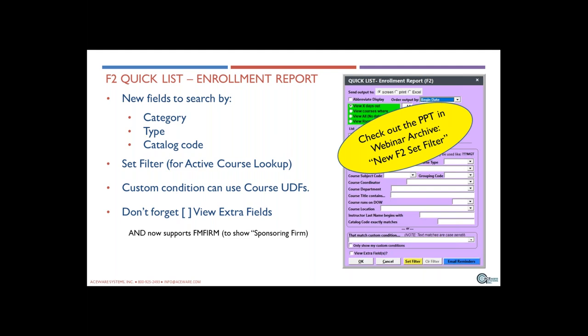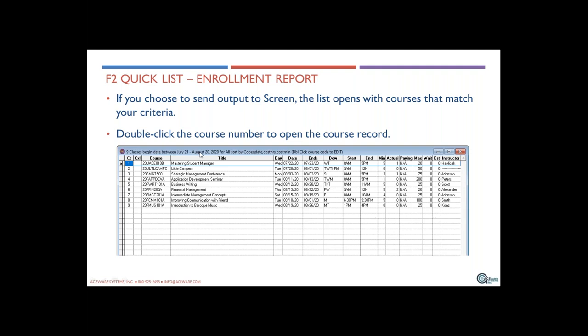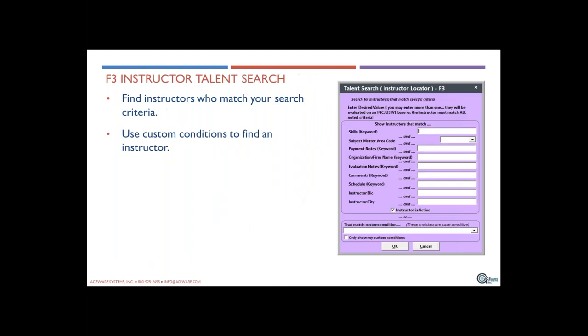Normally you can't use the find window to look up multiple courses by grouping code — you'd have to look up each course separately. But if you use F2 and set your parameters, you can bring up a list of courses and quickly go through and edit all of them. At the end we'll invite you to stump the chump with examples of data you'd like to find.